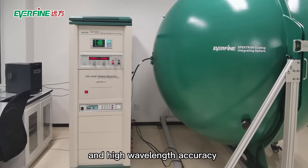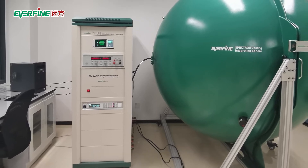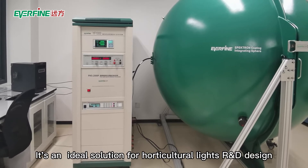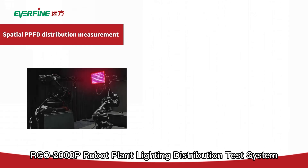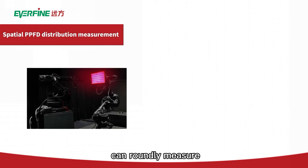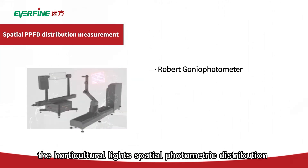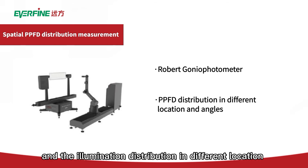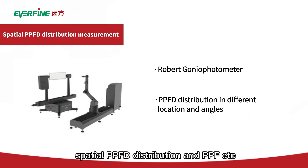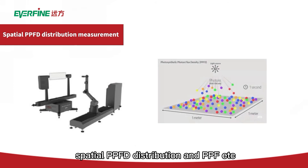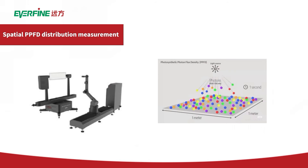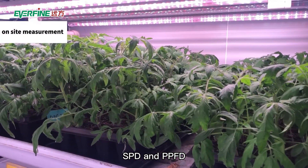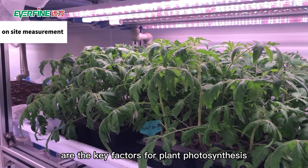The RGO-2000P robot goniophotometer lighting distribution testing system can measure horticultural light spatial photometric distribution, illumination distribution at different locations, spatial PPFD distribution, and PPF. SPD and PPFD are key factors for plant photosynthesis.